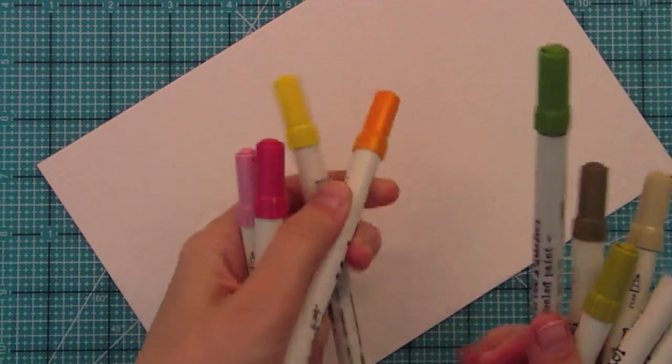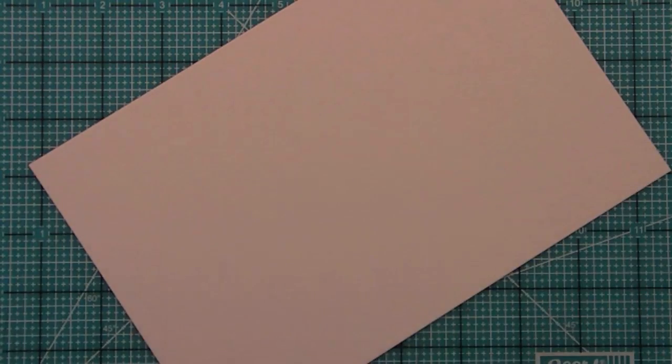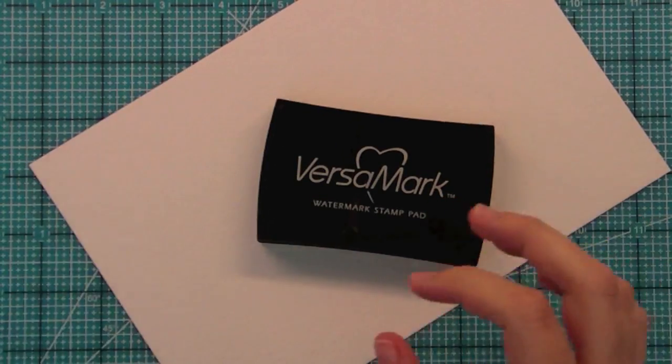When I was buying my Distress Markers I knew I couldn't buy all of them so I thought I'll buy a dark and a light in each kind of color so in the pinks, yellow, orange, green and blue.